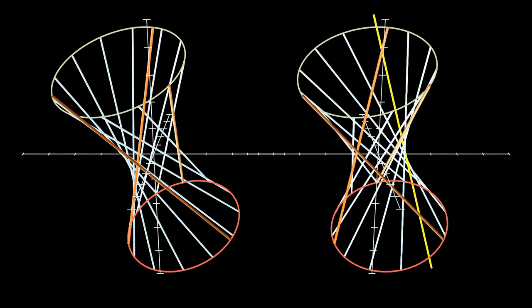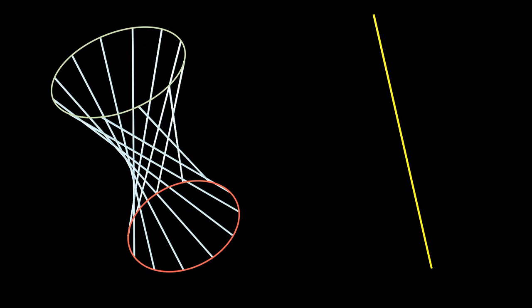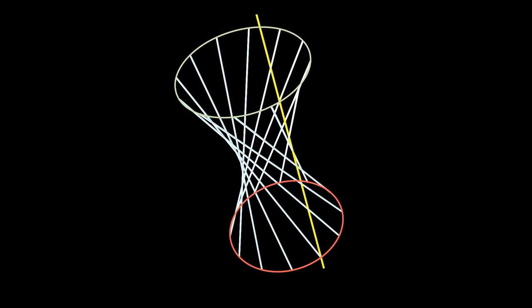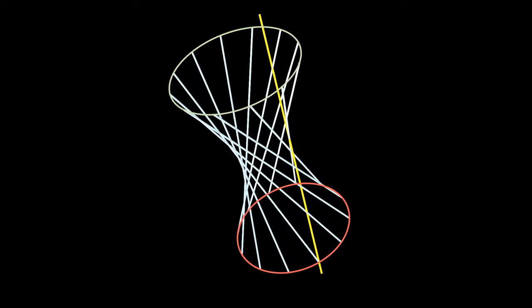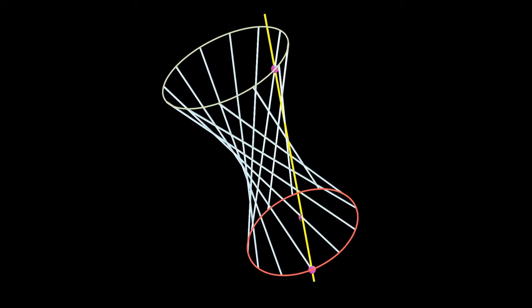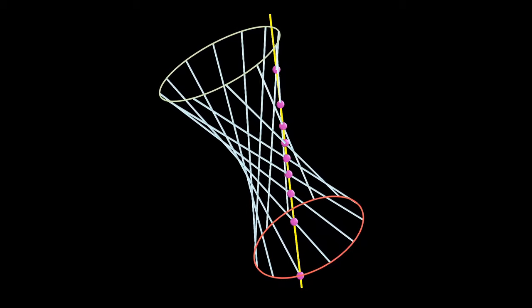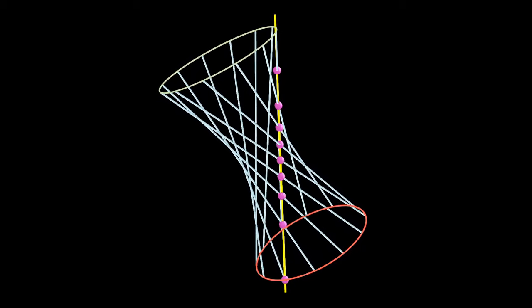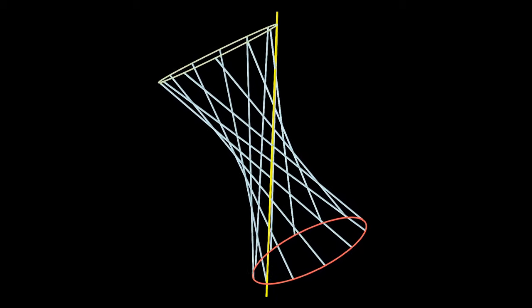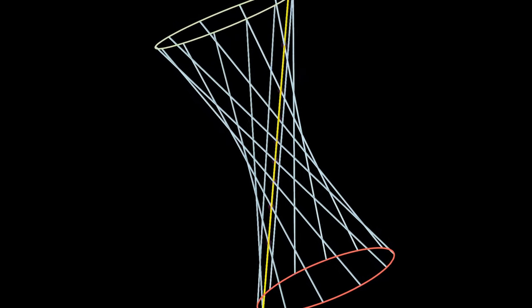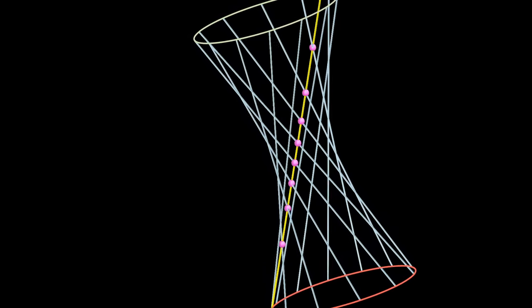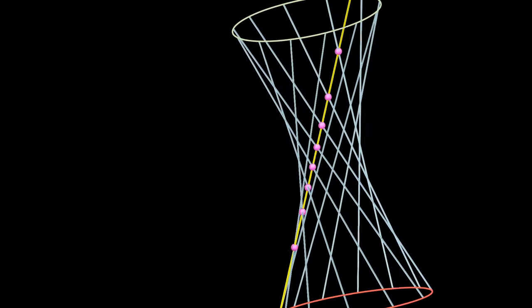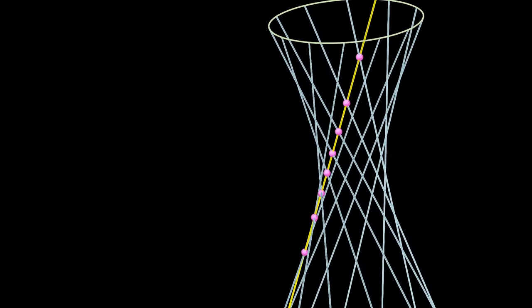Let's remove the given lines for a second and take a look at how a line on the right overlaps with the ruling on the left. The line from the second ruling intersects nearly all the other lines on this ruling. And in fact, if I could draw the entire infinite length of the yellow line and hyperboloid, you would see that it does in fact intersect every single line on the opposite ruling exactly once.